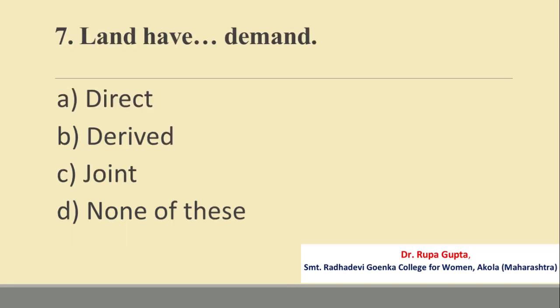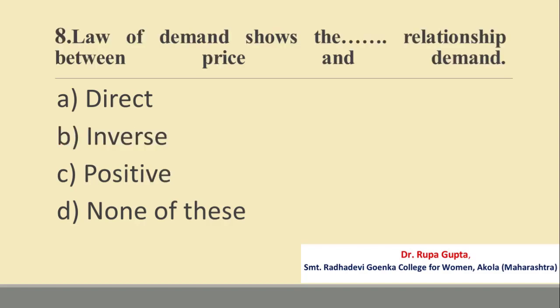Question number 7. Land has a dash demand. Options are: A. Direct, B. Derived, C. Joint, D. None of these. The correct answer is B, Derived.